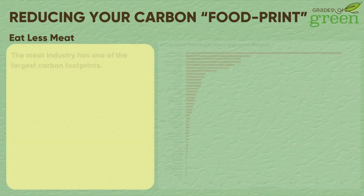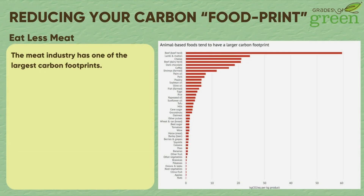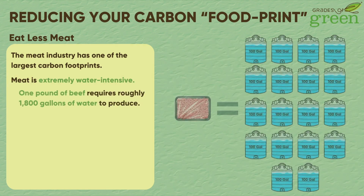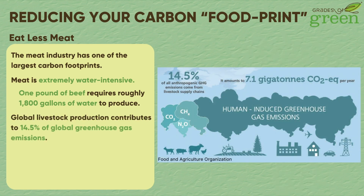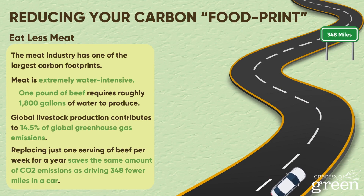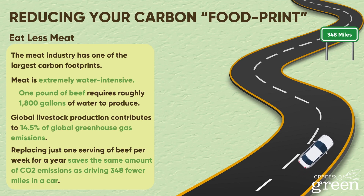The meat industry has one of the largest carbon footprints, with the grazing demands of livestock requiring some of the most extensive amounts of deforestation to operate. It's also extremely water-intensive, with one pound of beef requiring roughly 1,800 gallons of water. To meet these demands, greenhouse gases are emitted, contributing to climate change. According to the United Nations Food and Agriculture Organization, global livestock production contributes to 14.5% of global greenhouse gas emissions. Thus, eating less meat is a crucial step to the long-term health of the planet, and replacing just one serving of beef per week for a year saves the same amount of CO2 emissions as driving 348 fewer miles in a car.